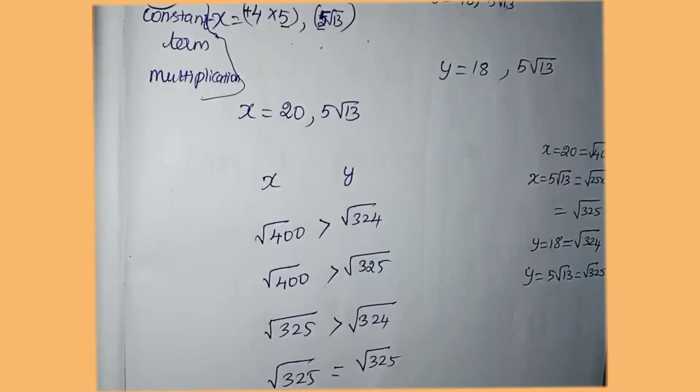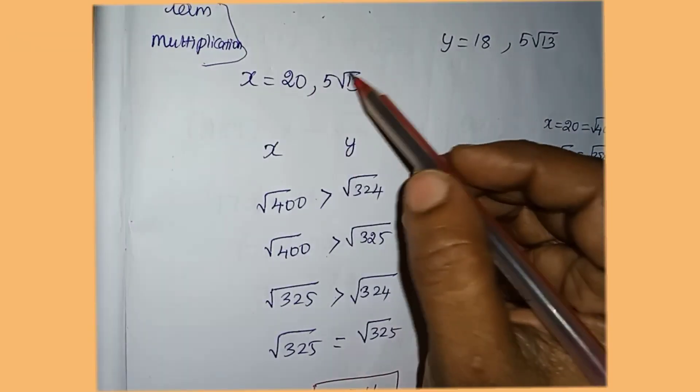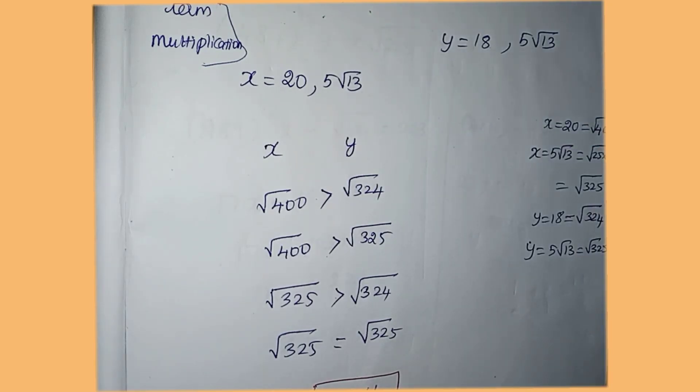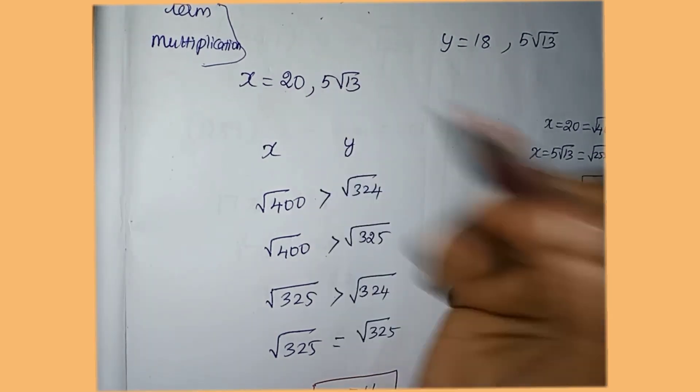So you compare the values to this value. For example, you can use root 400 for the value.